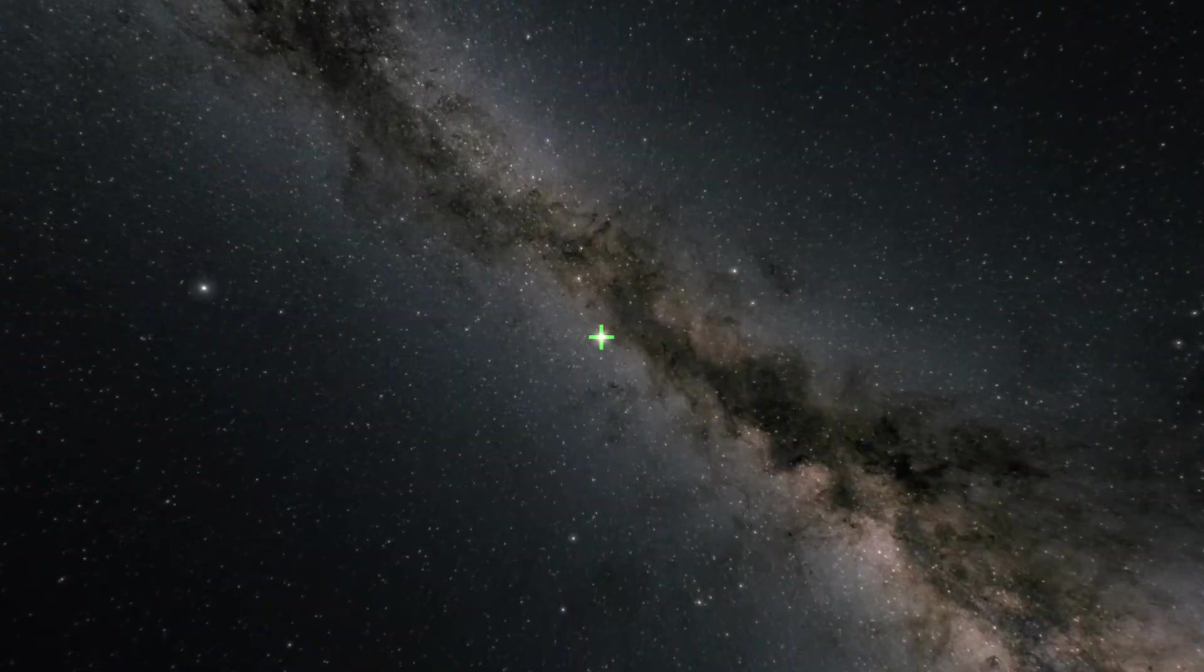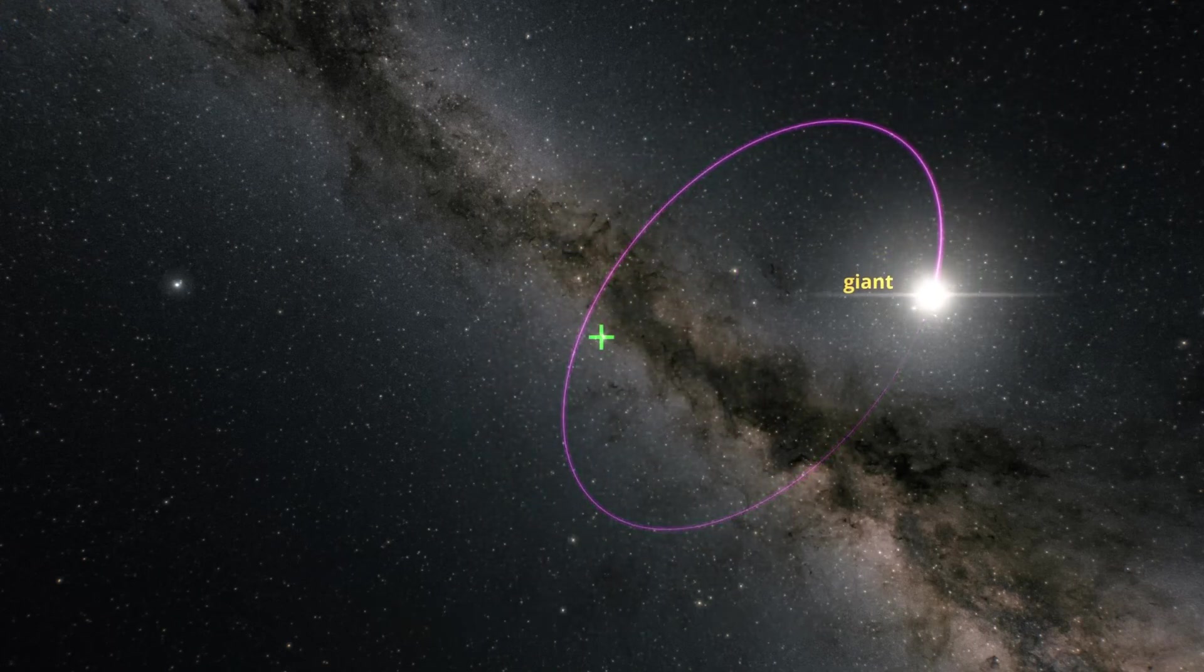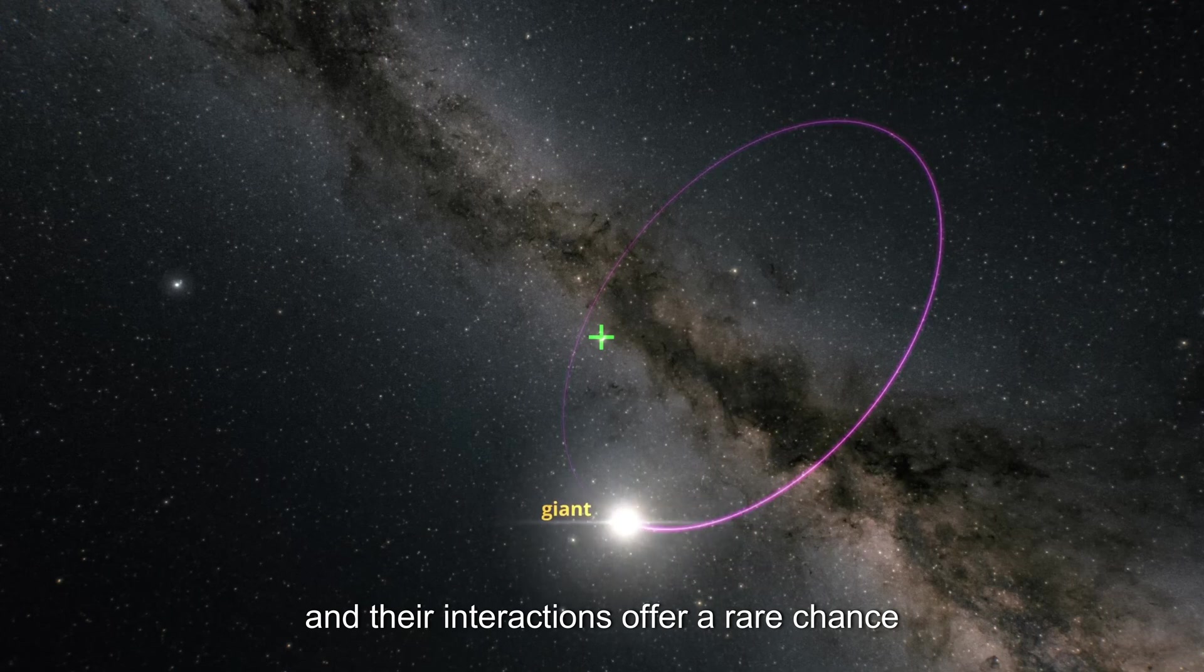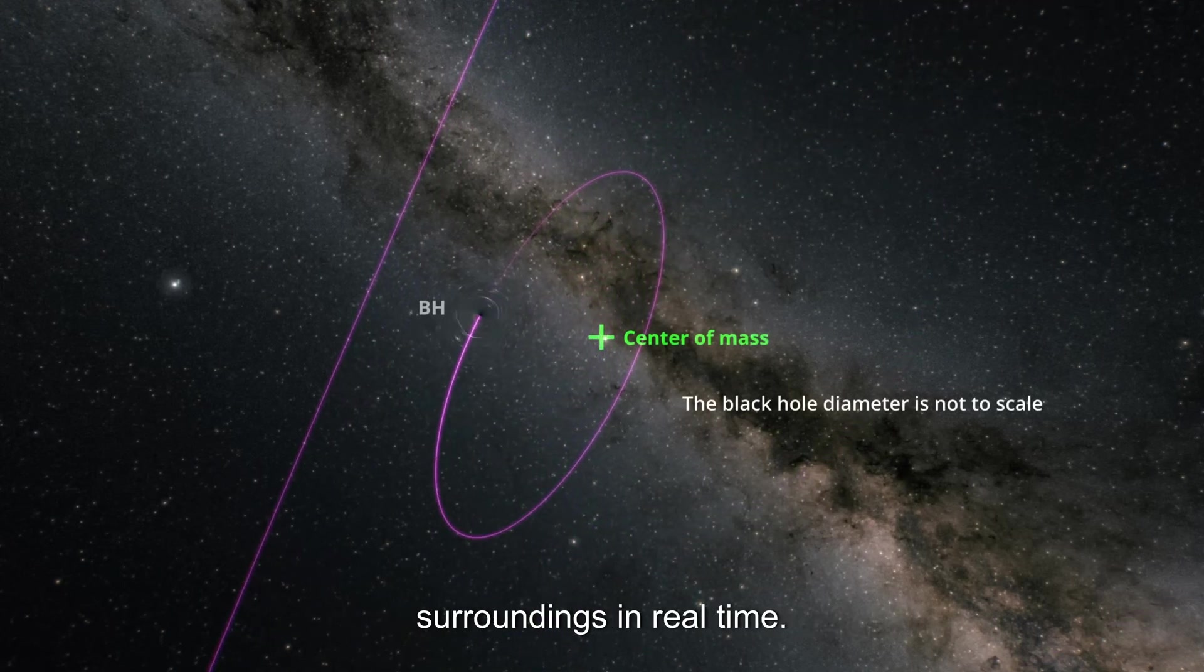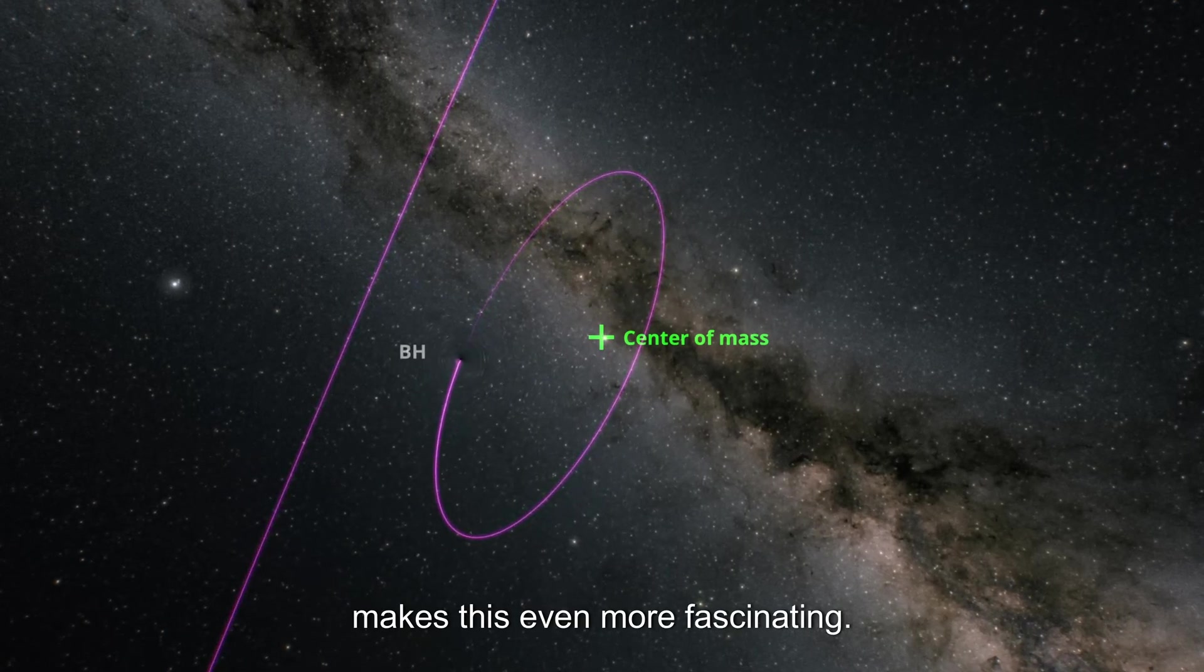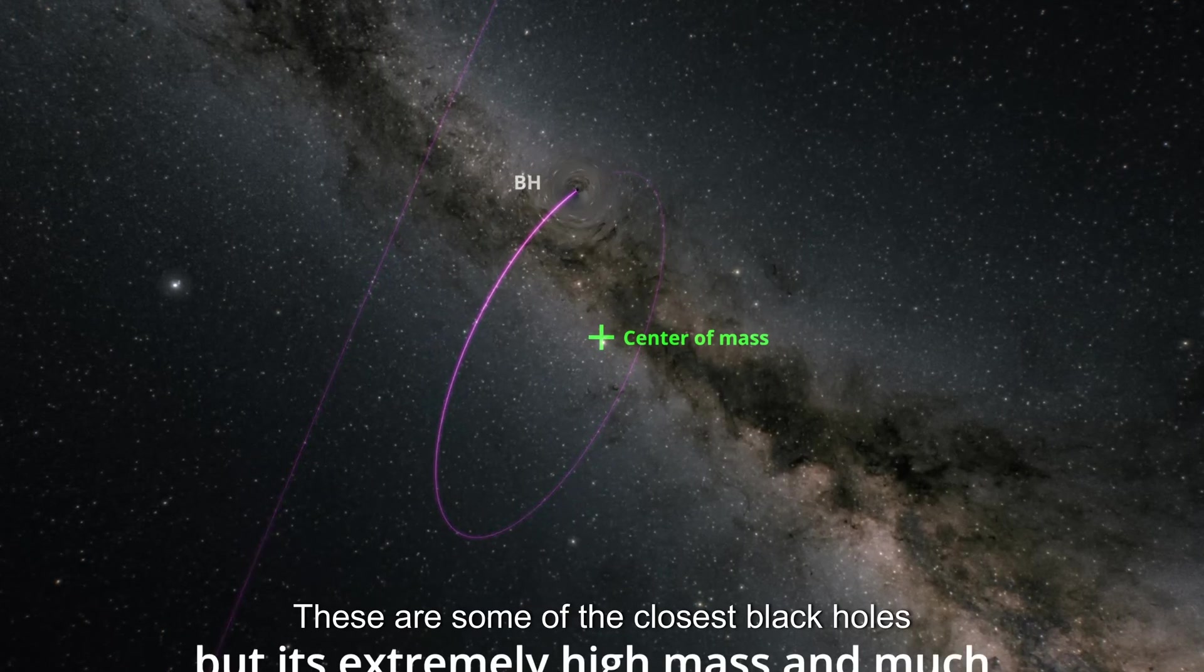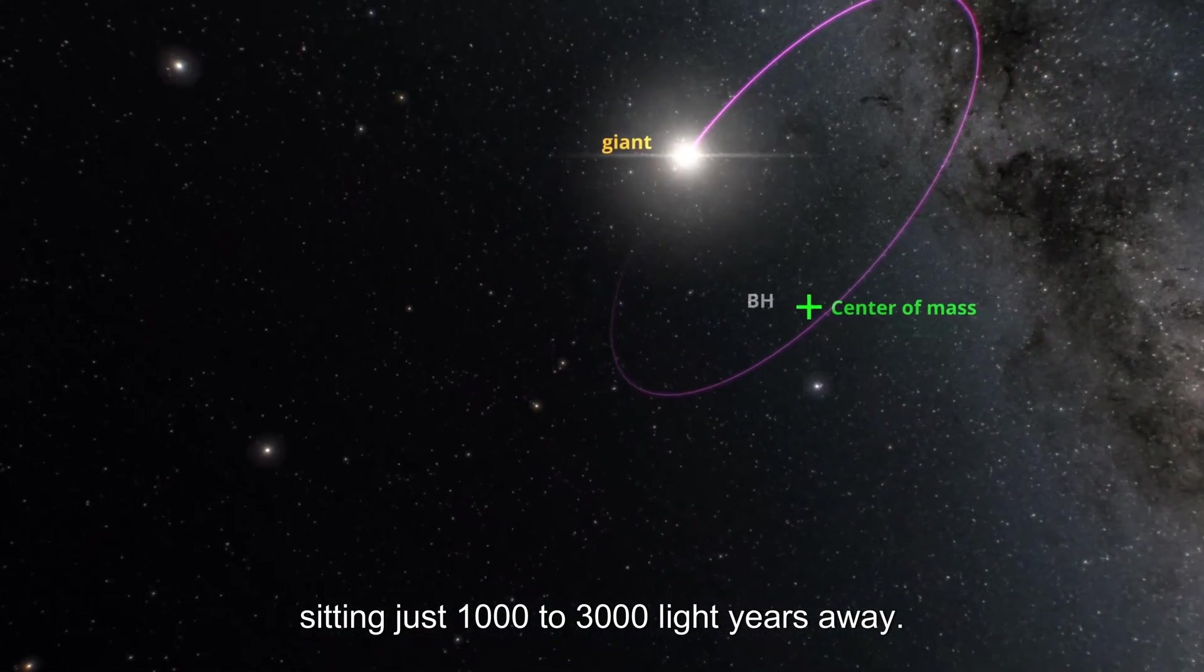But why is this discovery so important? Because these black holes are not isolated—they are part of a binary system. Each one has a companion star, and their interactions offer a rare chance to study how black holes influence their surroundings in real time.